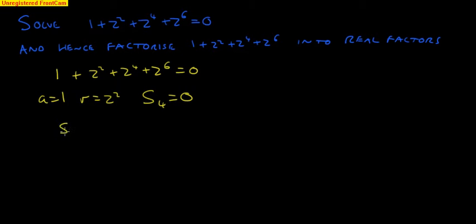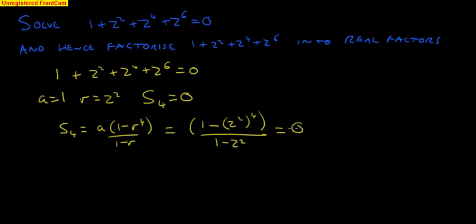So the sum to 4 terms using geometric series is a times 1 minus r to the 4 over 1 minus r. So in our case, this is 1, we're writing that, 1 minus r is z squared all to the power 4, all divided by 1 minus z squared and this equals 0.